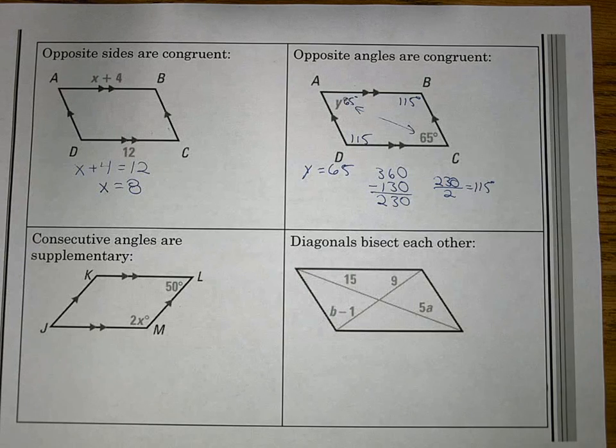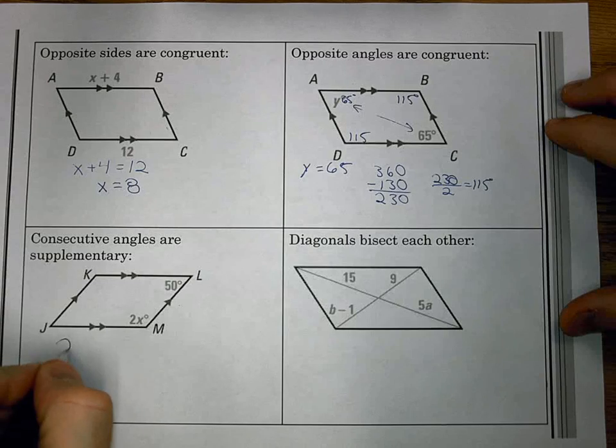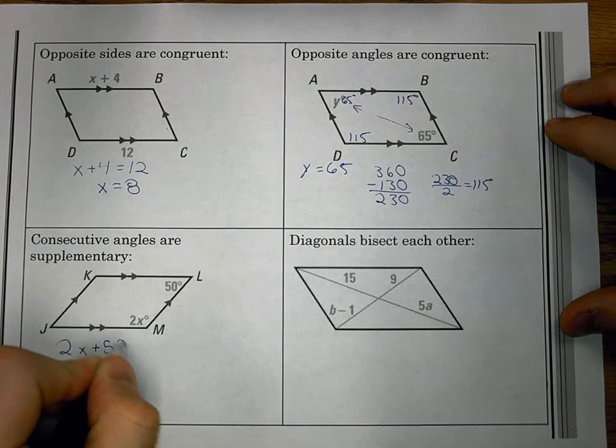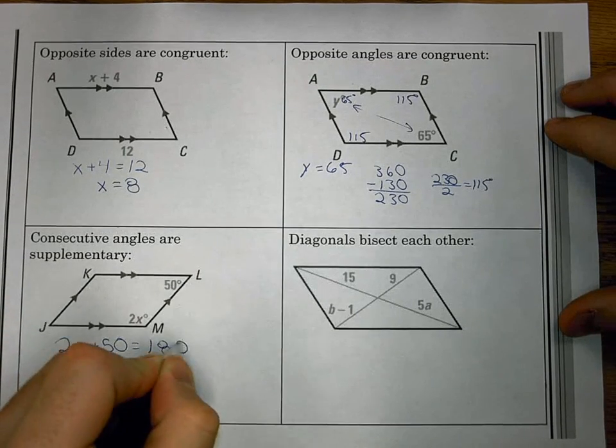So on consecutive angles supplementary, I looked at those two angles. First off, they are not opposite of each other, so I'm not going to set them equal. Even just kind of taking a general approach to it, they don't look like the same angle. And in a parallelogram, when angles are consecutive to each other, they typically aren't the same. The only case would be if they were 90 degrees. So consecutive angles are supplementary.